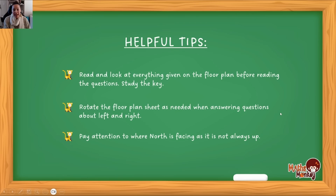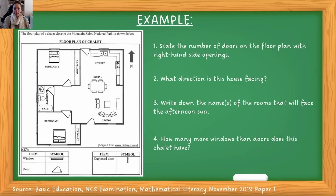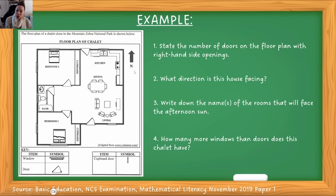Now that we have some guidelines on how to approach these questions, let's actually do one. On the left here it says the floor plan of a chalet close to the Mountain Zebra National Park is shown below. So I look — floor plan of a chalet — and now I look at everything. I see cupboards, bedrooms, the different rooms. I pay attention that north in this case is facing up. At the bottom they give me a key and tell me that this is a window, so I can see the windows on the image, and the doors are represented like this, and then the cupboard door is this broken line. Now that I've read everything, looked at everything, and studied the key, I can actually answer the questions.